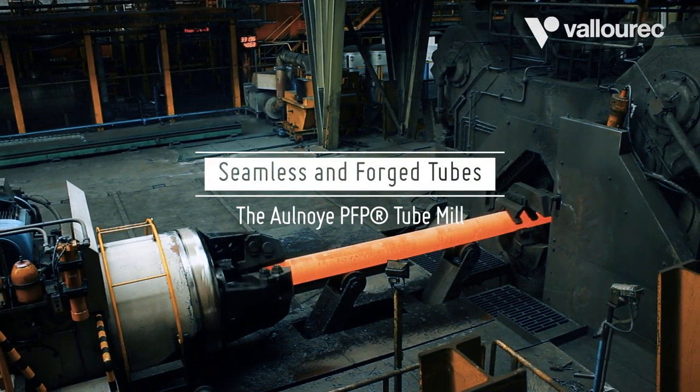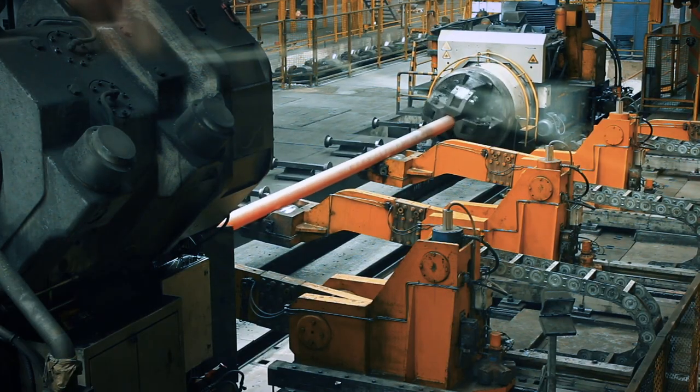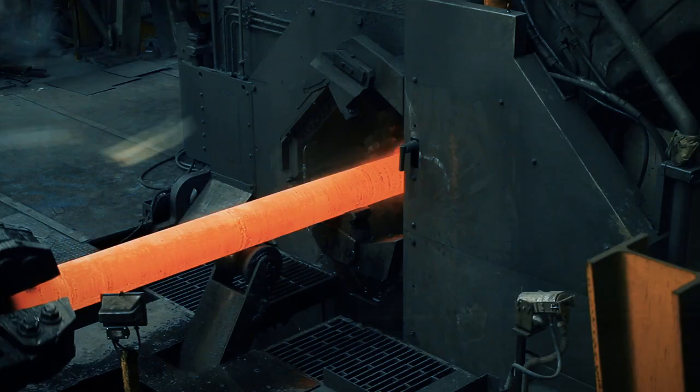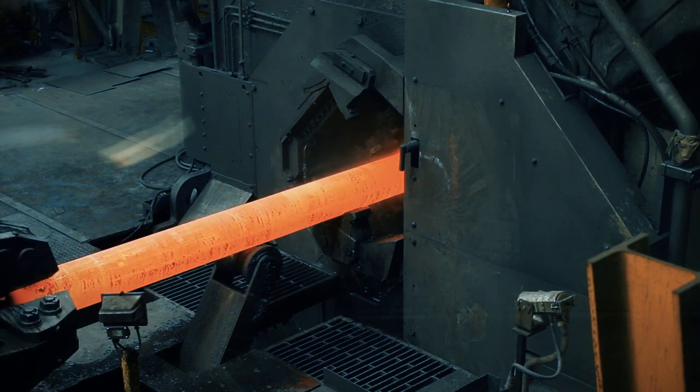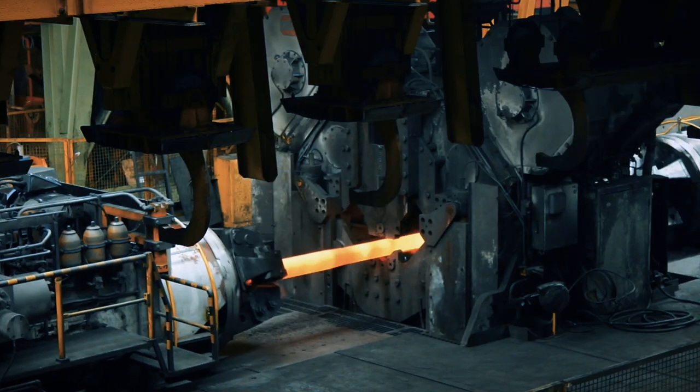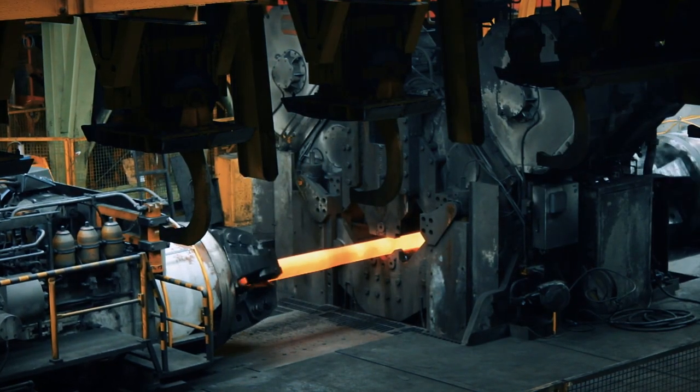In its Aulnoy PFP tube mill, Valurek has been producing seamless tubes since 2009 with an impressive track record, an efficient and highly flexible integrated tube mill.